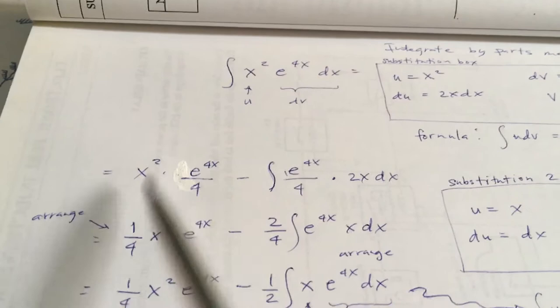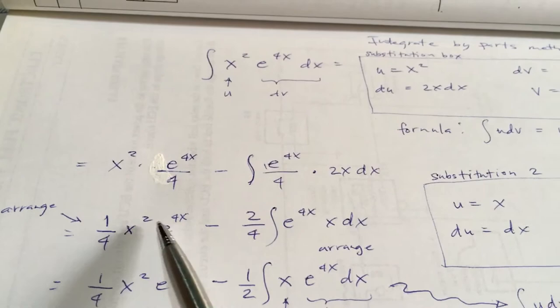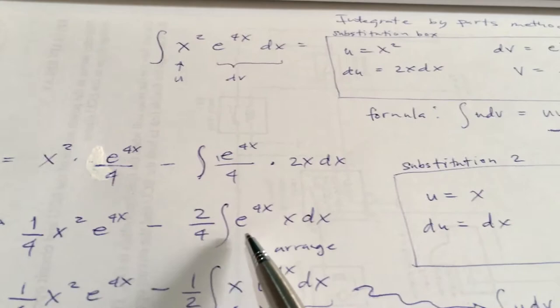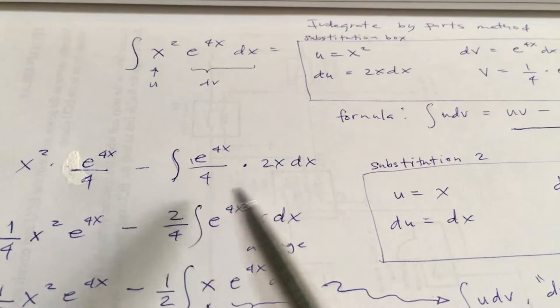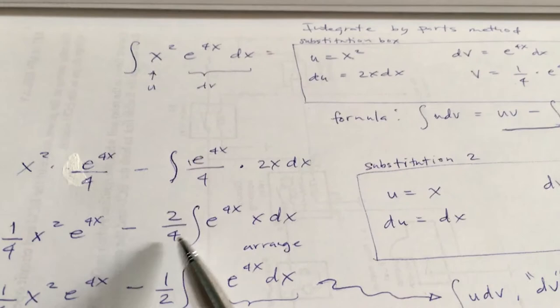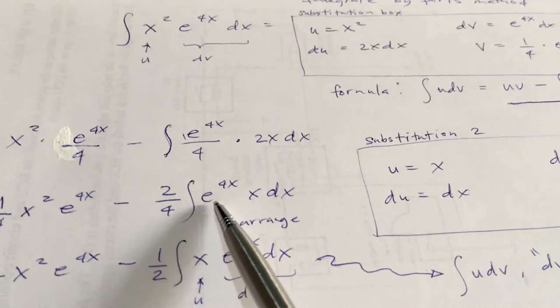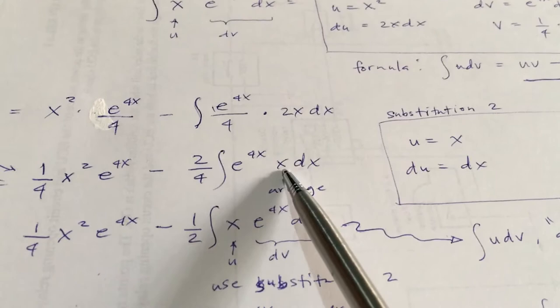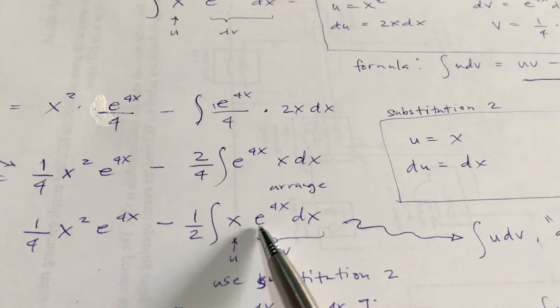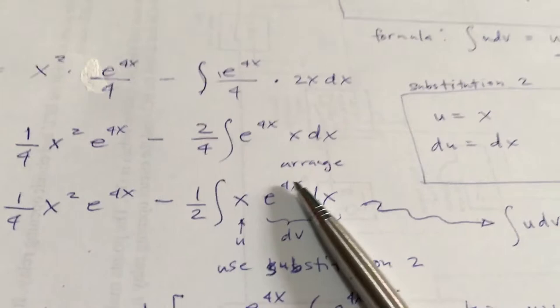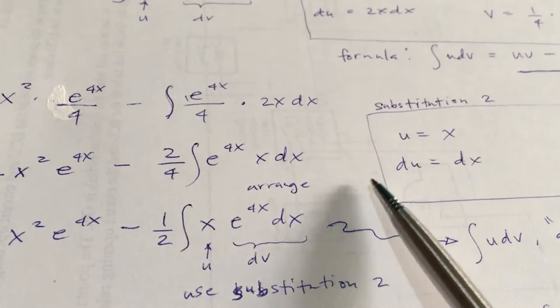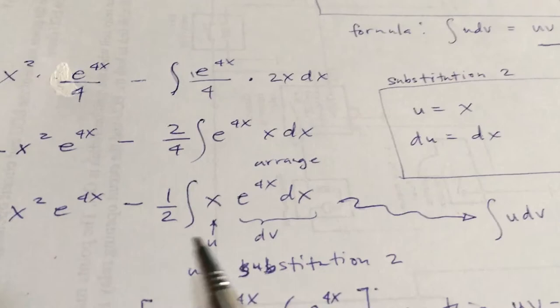Arrange this as 1 fourth times x squared times e raised to the 4x. Minus — we are still using the formula — minus 2 over 4, because 2 times 1 fourth is 2 over 4. Place it outside of the integral sign: integration of e raised to the 4x times x dx. The x will become the u variable, while the exponential will become the dv. The exponential is always the dv, or the trigonometric function can also be the dv part.